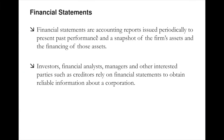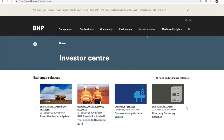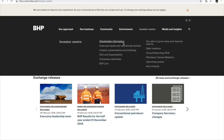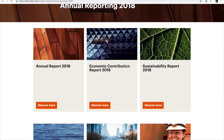Financial statements are accounting reports issued periodically to present past performance and a snapshot of the firm's assets and financing of those assets. For a public listed company, you can easily find them on a company's website — for example BHP. You go to BHP's website, click Investor Center, and you can download the annual reports for 2018. Not all reports are required by regulators, and what we are going to study are the three main ones that need to be reported at a minimum as a listed company.